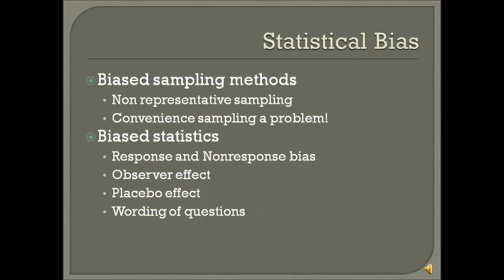Statistical bias comes in two main flavors. There are biased sampling methods, such as non-representative sampling — convenience sampling is really a problem in terms of producing a biased sampling method. Additionally, you could have biased statistics.